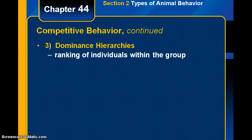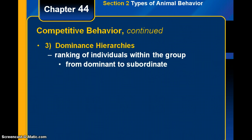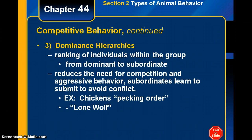The third type of competitive behavior is called a dominance hierarchy — a ranking of individuals within a group, from the dominant to the subordinate. Dominant is higher than the subordinate. A dominance hierarchy reduces the need for competition and aggressive behavior because the subordinate learns it needs to submit.